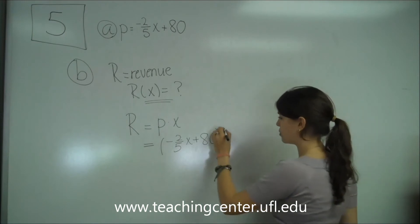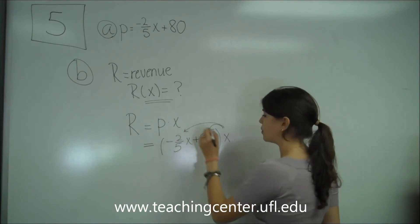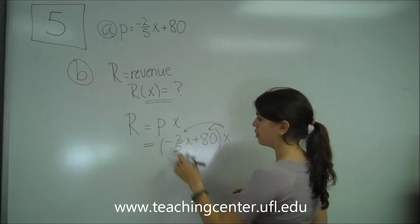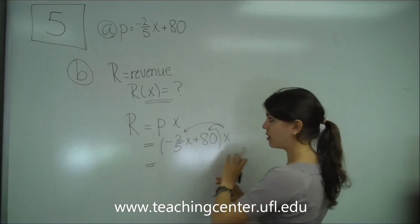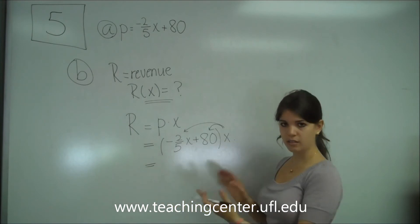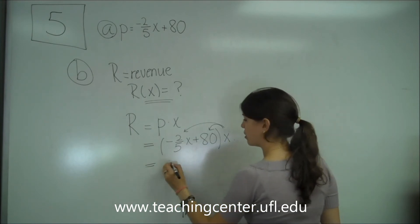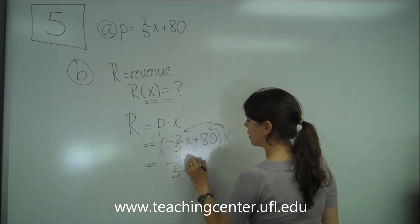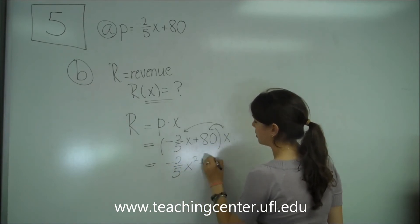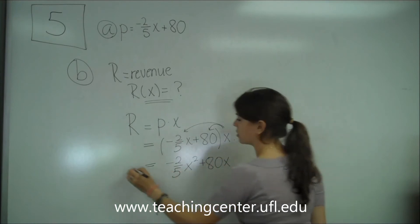And then we have to expand it. You don't want to leave it like that because they asked you for R in terms of X, so you just want to take out all the parentheses and just have one expression instead of different factors. So this becomes negative 2 fifths X squared plus 80 X equals R.